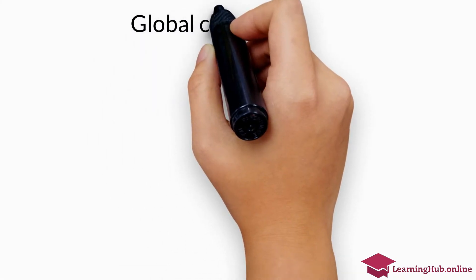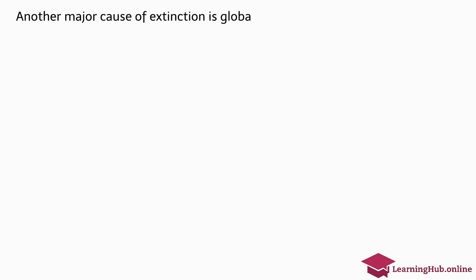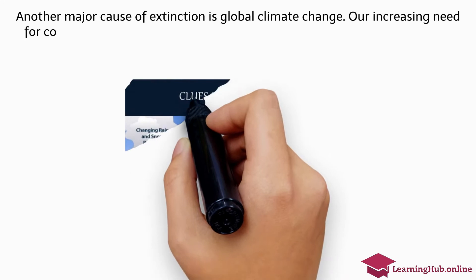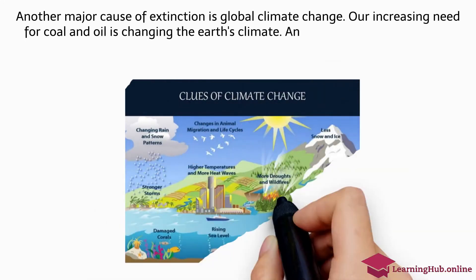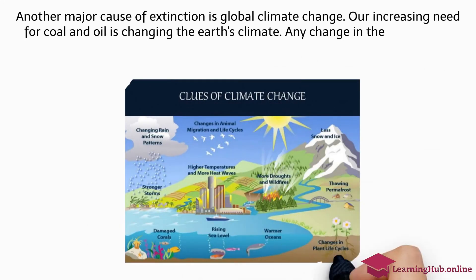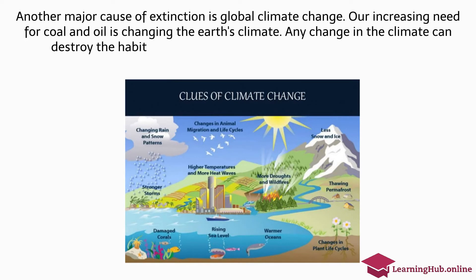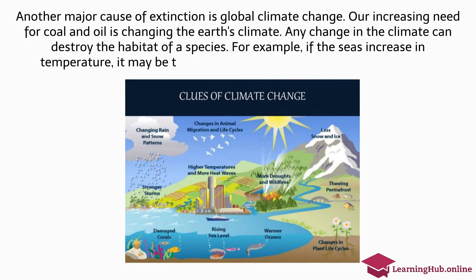Global Climate Change. Another major cause of extinction is global climate change. Our increasing need for coal and oil is changing the Earth's climate. Any change in the climate can destroy the habitat of a species. For example, if the seas increase in temperature, it may be too warm for certain types of fish to reproduce.